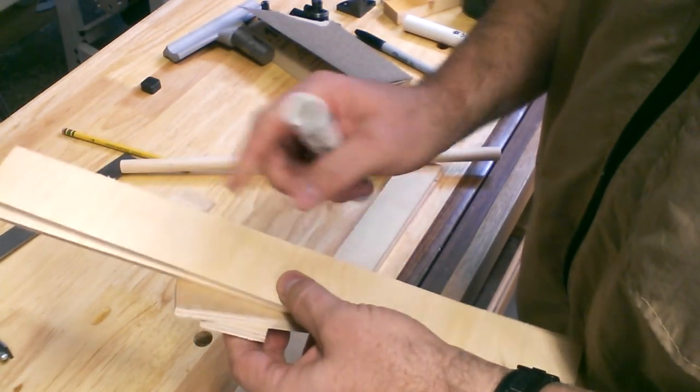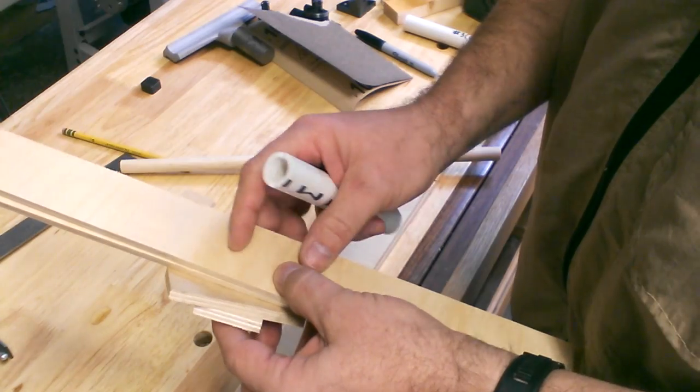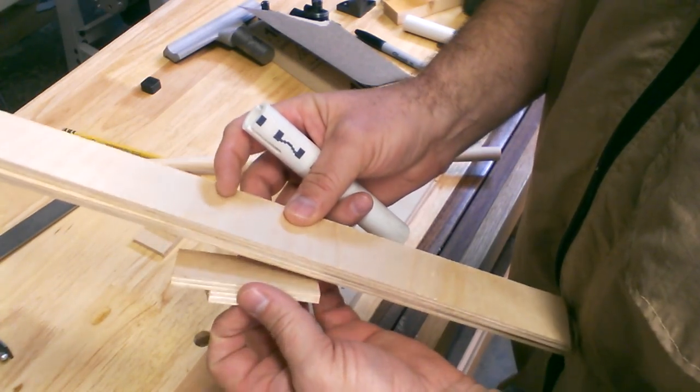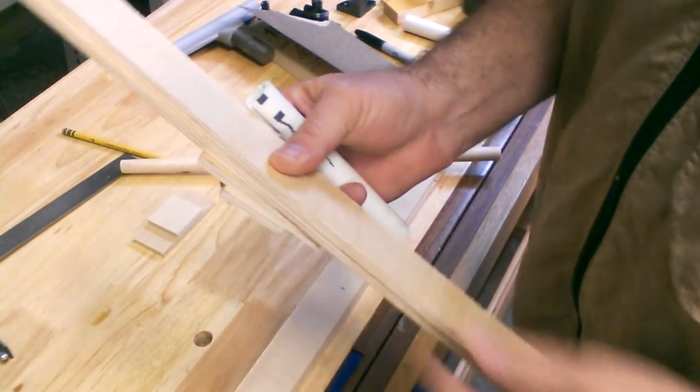So the next thing I need to do then is mark these out, cut them on the band saw. Then I need to glue all this stuff up together.